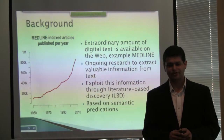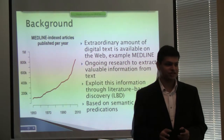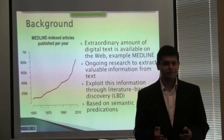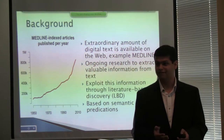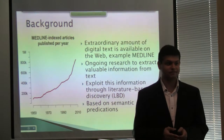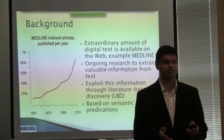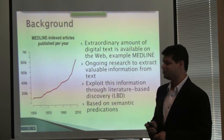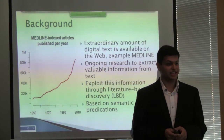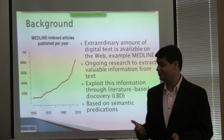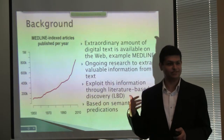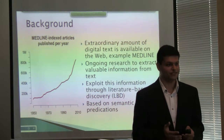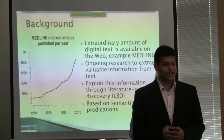To give a little bit of background, there is an extraordinary amount of literature available in the form of digital text on the web. The biomedical domain is no different. Medline, for example, indexes citations or journals on biomedical literature. The illustration on the left shows how many articles are getting indexed in the Medline database every year, and you can notice that this graph is more of an exponential graph, showing that we have a lot of text in that domain.